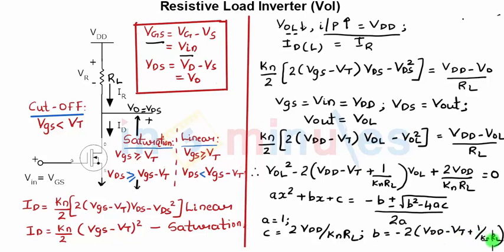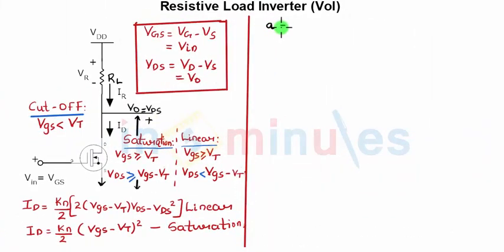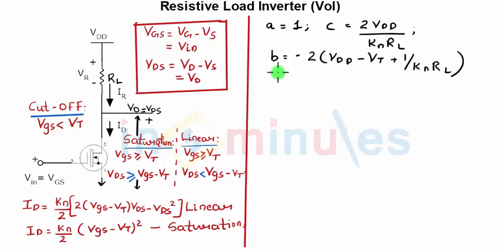Let's simplify this equation using the quadratic expression. So we just saw that A is equal to 1, C is equal to 2VDD upon KN RL, and B is 2(VDD minus VT) plus 1 by KN RL. We know that the roots are minus B plus or minus, in this case minus will give us the correct value, square root of (B squared minus 4AC) by 2A.